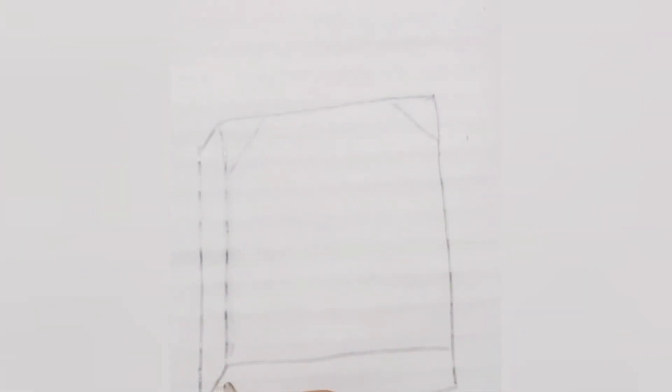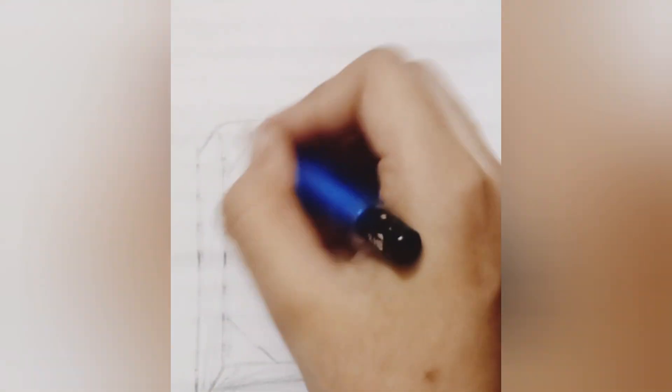Shade the sides lightly and gradually increase the intensity of the shading as you move towards the back. And there you have it, a simple 3D cube with "Real Analysis" inside. Thanks for watching and don't forget to like, share, and subscribe for more drawing tutorials. Keep watching and happy drawing.